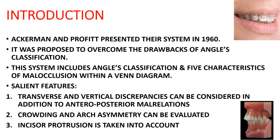This system includes Angle's classification and five characteristics of malocclusion within a Venn diagram. A Venn diagram is where you draw overlapping circles, each representing various characteristics — that is the Venn diagram used in Ackerman and Proffit's classification.